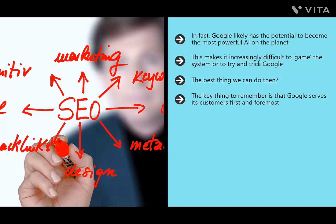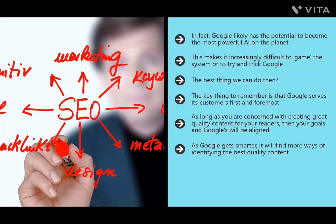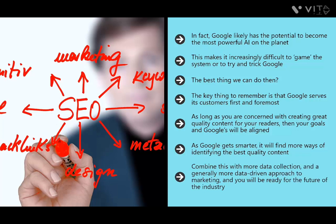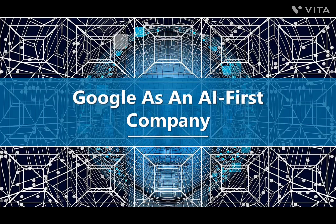As Google becomes more human, writing for Google and writing for the reader will mean essentially the same thing. Focus on great quality content and providing real value. Google serves its customers — the users who use it to find information and entertainment — first and foremost. As long as your goals align with providing great content for your readers, each time Google gets smarter, that will work in your favor. Combine this with more data collection and a data-driven approach, and you'll be ready for the future.